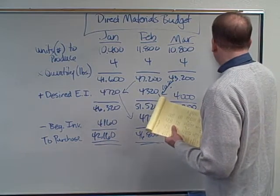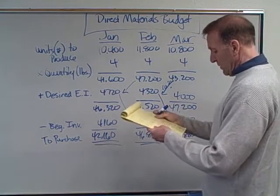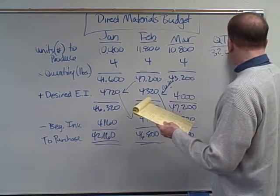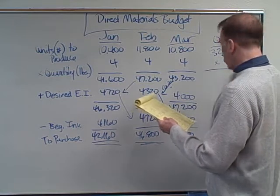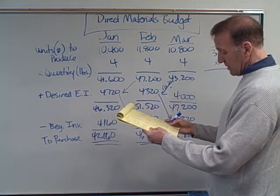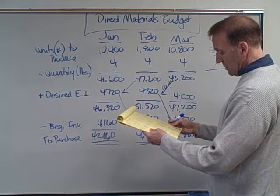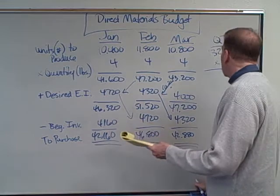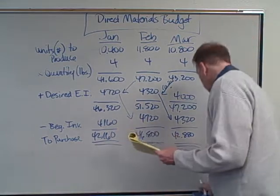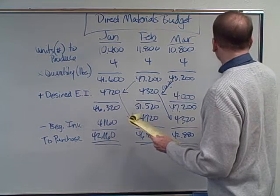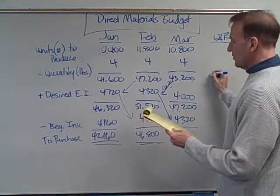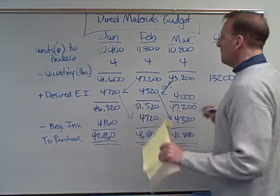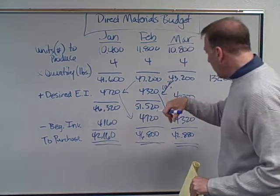Now let's look at the quarter total, since some textbooks ask for this on homework. Adding up the production needs: 41,600 plus 47,200 plus 43,200 gives 132,000 pounds of tomatoes for the quarter.